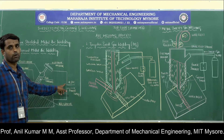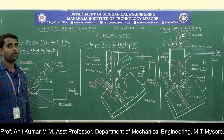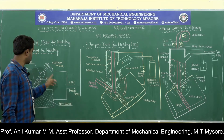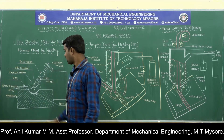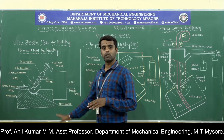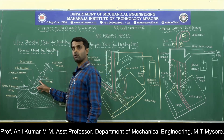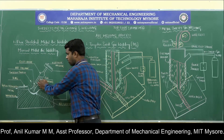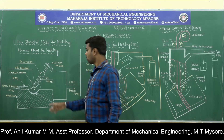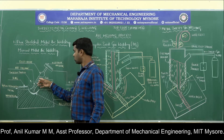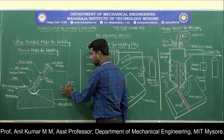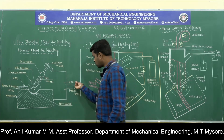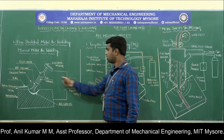The electrode is rigidly fixed on the electrode holder. The electrode holder is connected to the negative terminal of the power source, and the workpiece is connected to the positive terminal. The electrode is made up of the same material or same chemical composition as the workpiece material — for example, if you are welding cast iron, the electrode is made of cast iron. The flux is coated over the electrode.